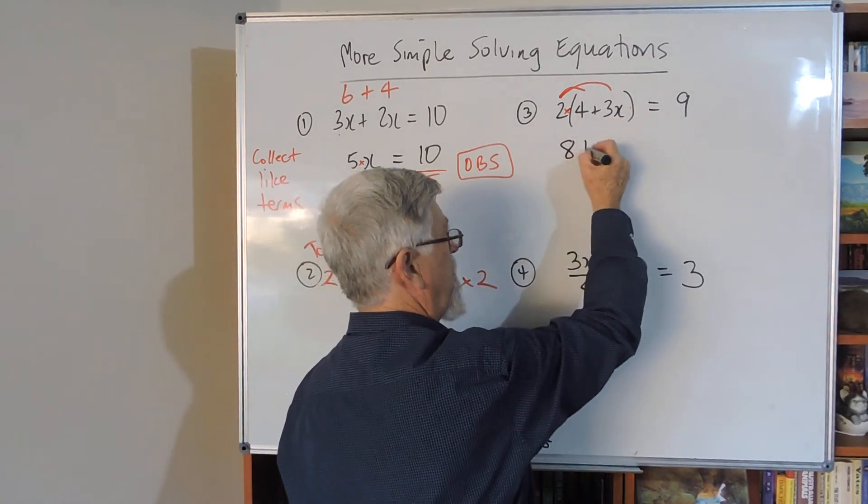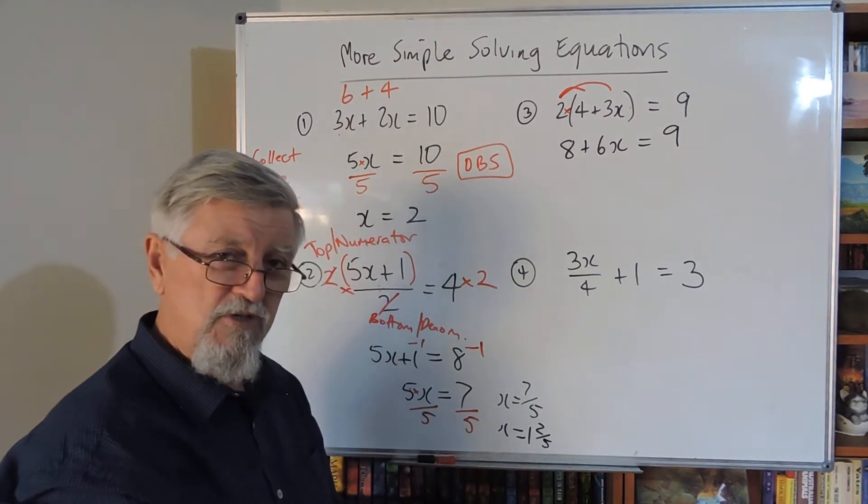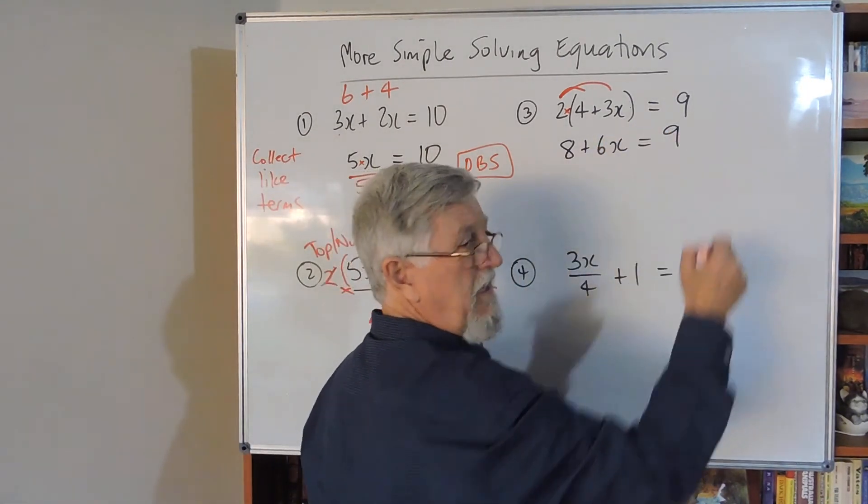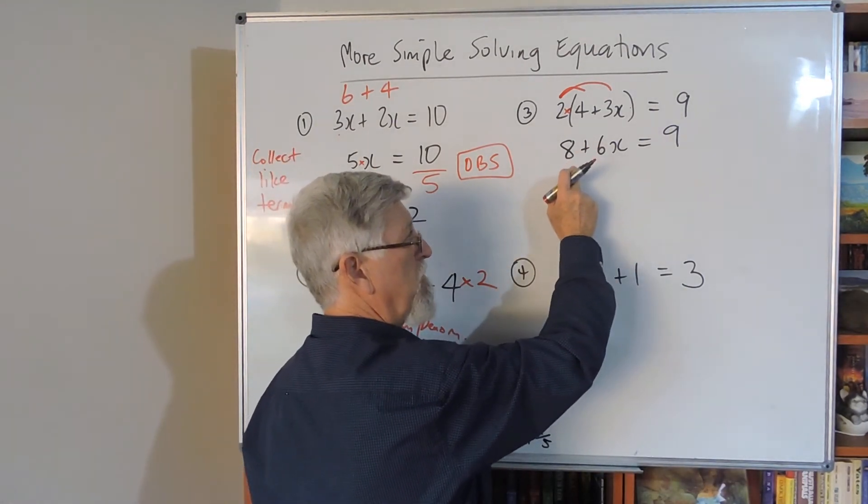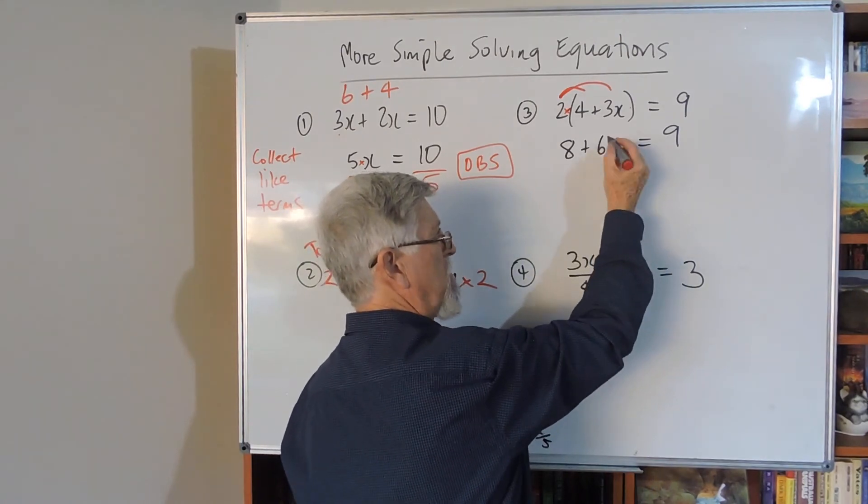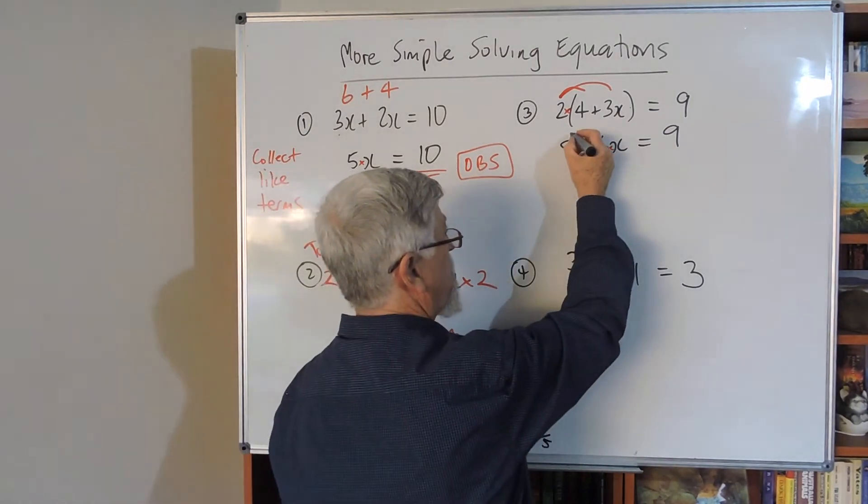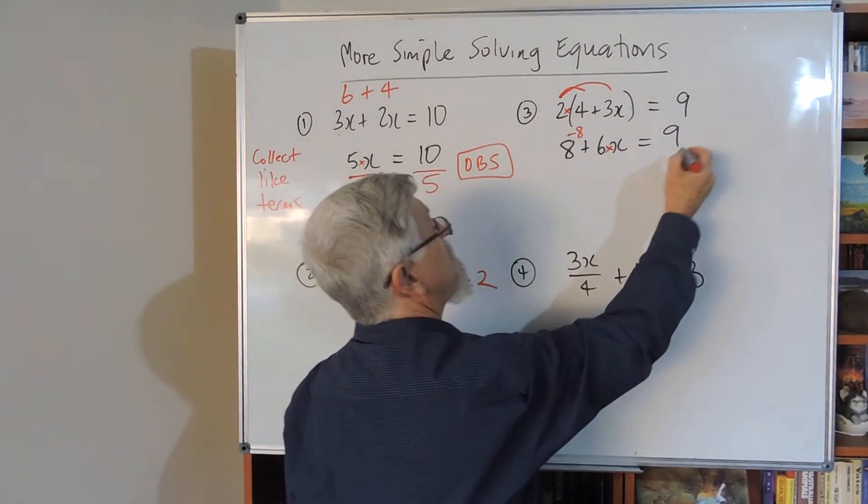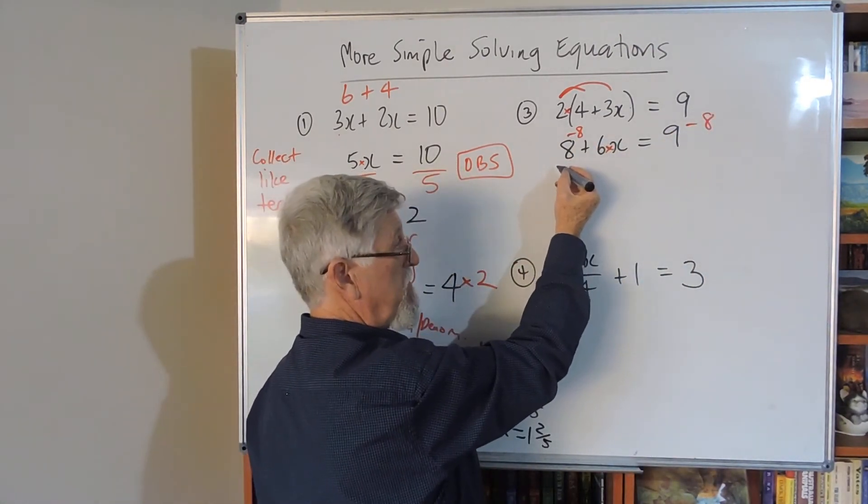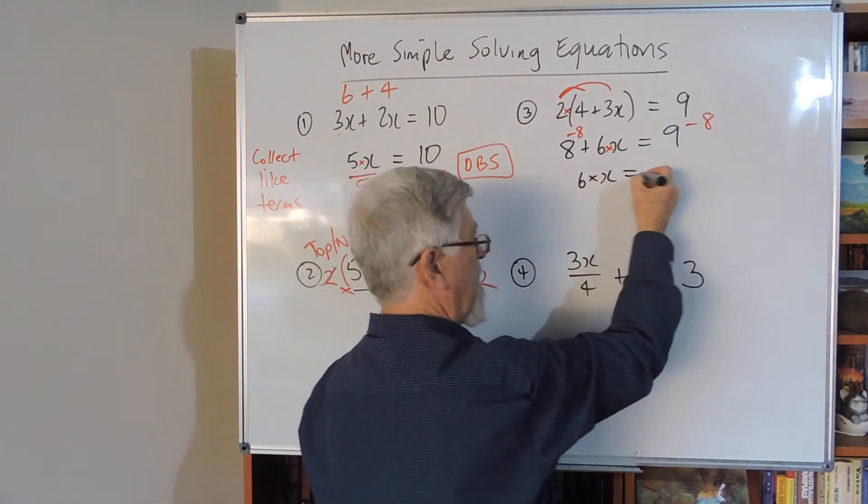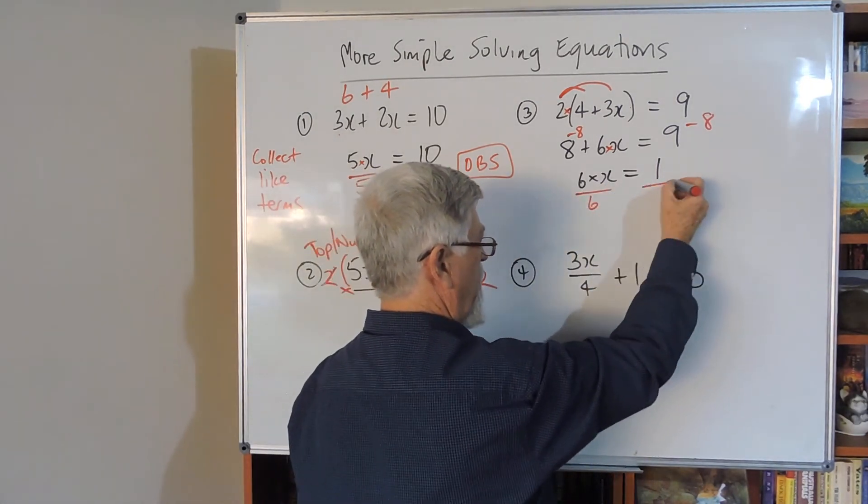Here's another thing I see students mess up - they'll go take 6, because they think they're removing the number at the back. But the 6 is married to the x with a multiply, while the 8 is by itself. So I take 8 from both sides. Then 6x = 1. Divide by 6 on both sides.